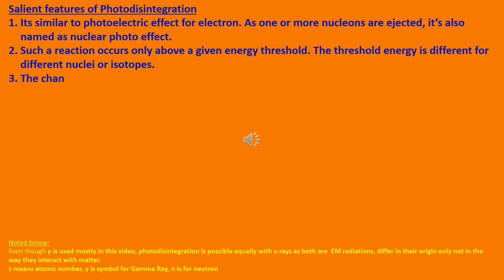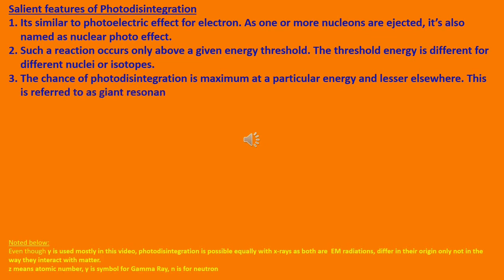The chance of photodisintegration is maximum at a particular energy and lesser elsewhere. This is referred to as giant resonance and often is attributed to electric dipole absorption of photon.